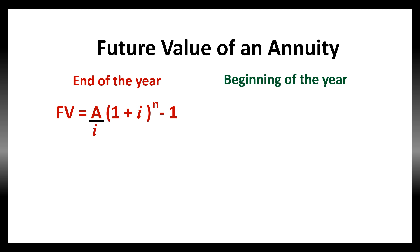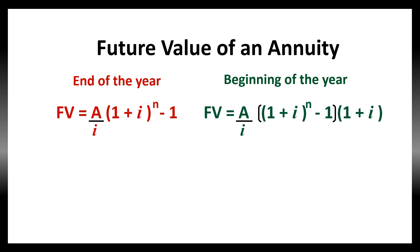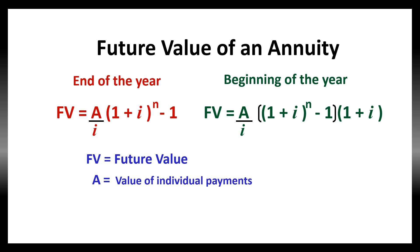Now, let us check out the change in the formula when the cash flows are received or paid at the beginning of the year. The formula will be: FV = (A / I) × (1 + I)^N − 1 × (1 + I). This extra (1 + I) factor is included when the cash flows are coming at the beginning of the year. Here, FV is the future value, A is the value of individual payments, I is the interest rate, and N is the number of periods.